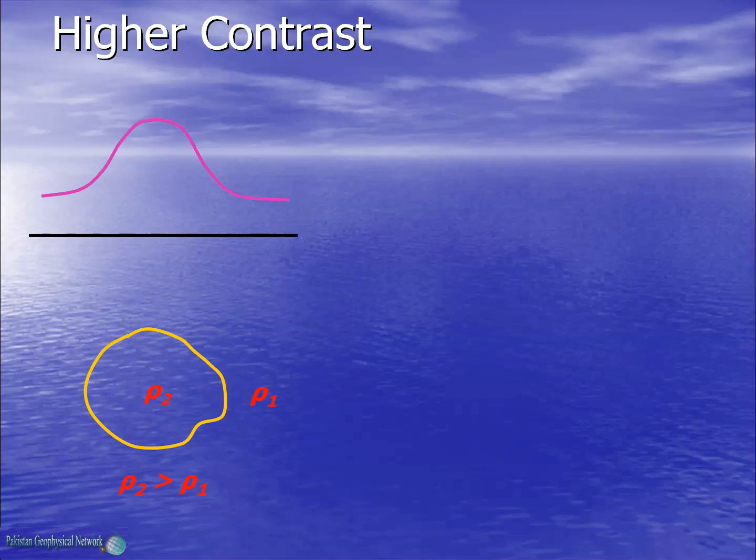Here we have a subsurface body, and its density is higher than the surrounding rock unit, so we have an anomaly. Now, if the density is much higher than the surrounding rocks, its anomaly would also increase.